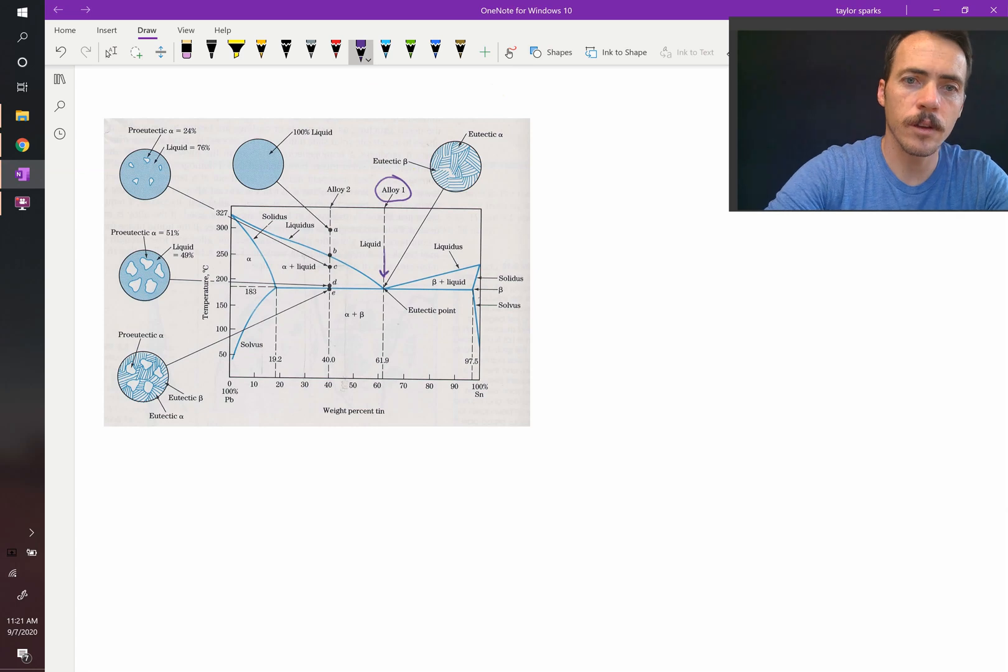As you cool it down, right there, since we're at the eutectic composition, there's a single temperature and above that you're basically pure liquid. As soon as you go below that, you end up with the eutectic structure where they're showing you that you've got eutectic alpha and eutectic beta.